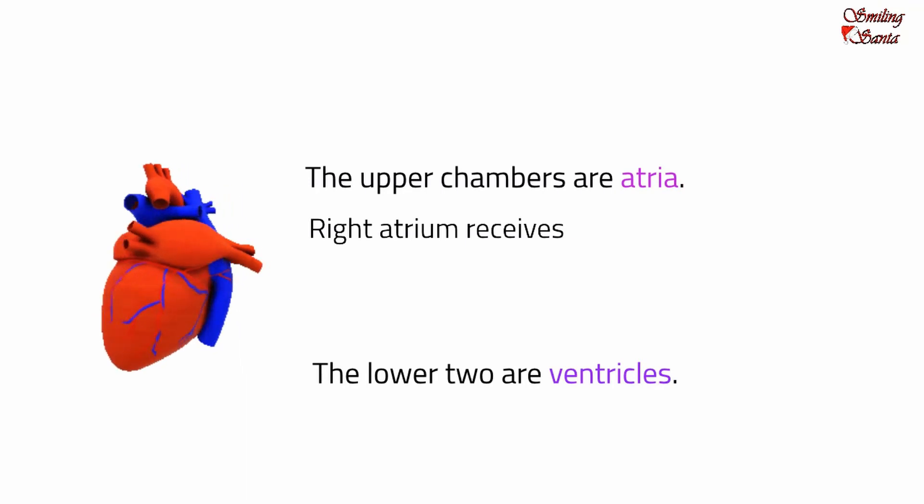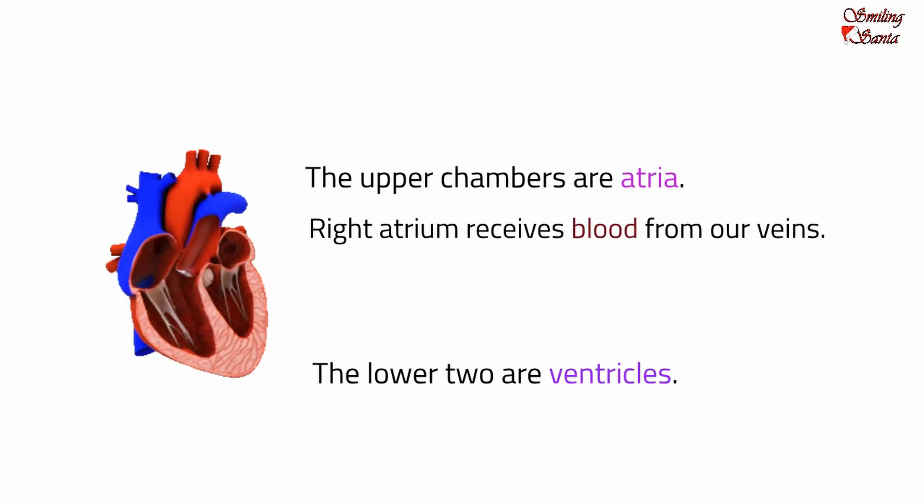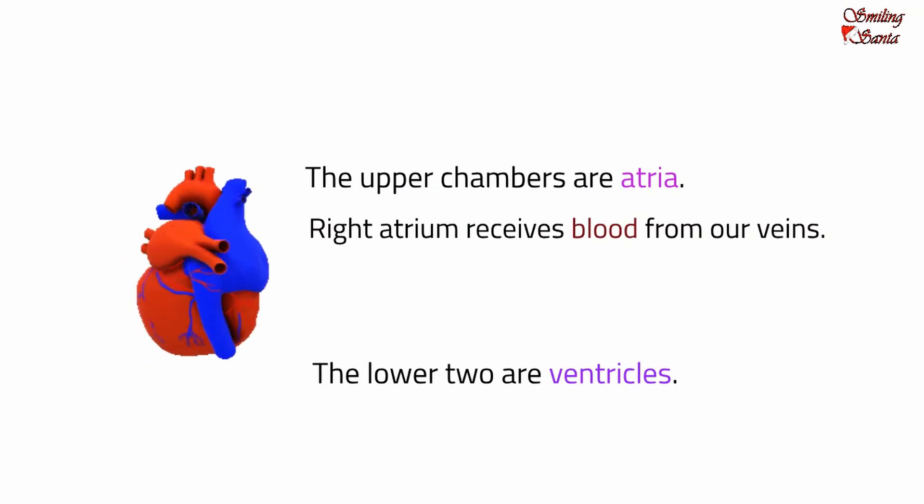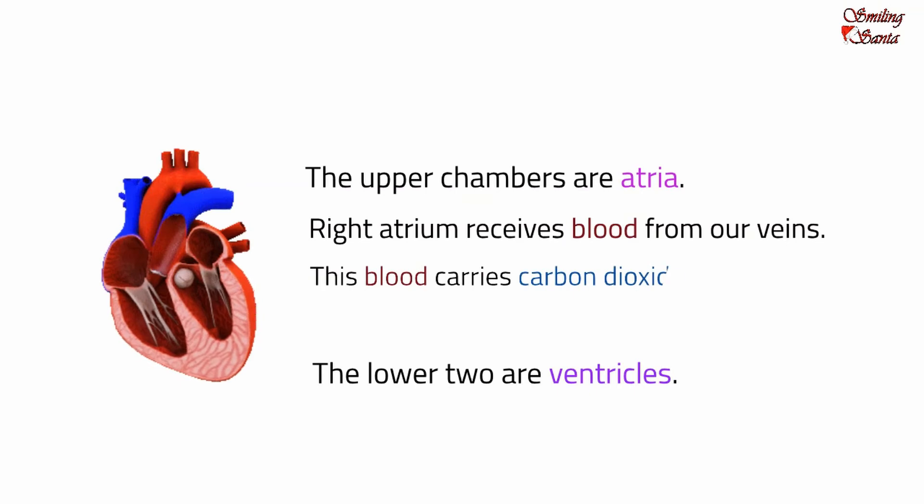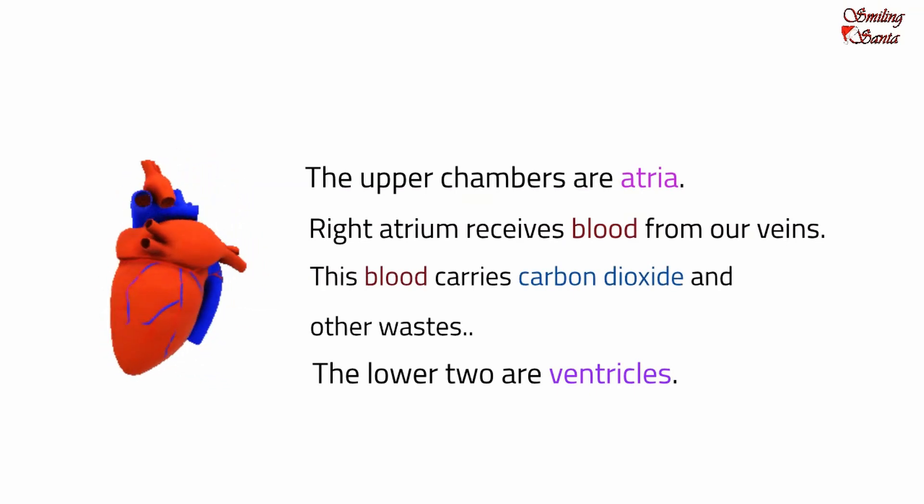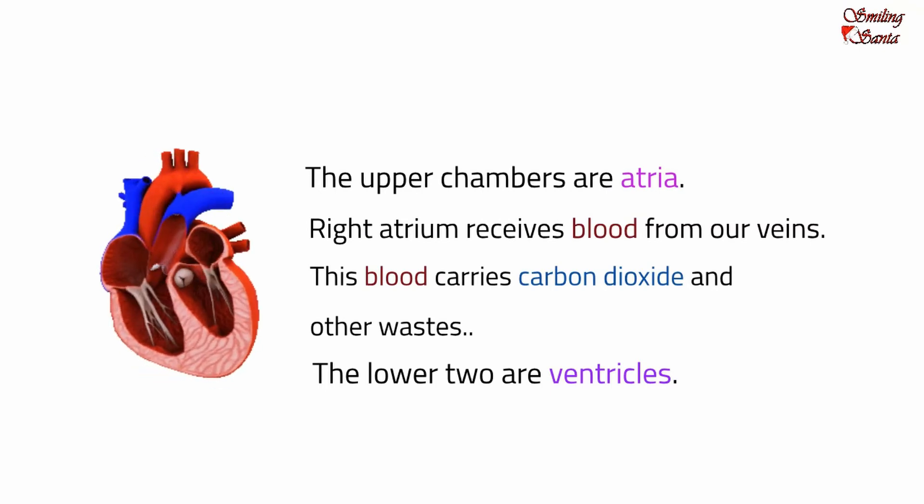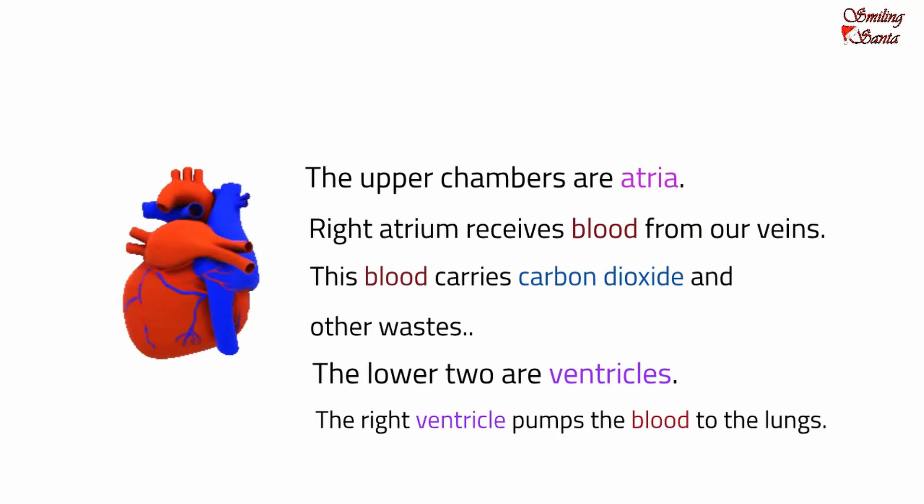The right atrium receives blood from our veins. This blood is already circulated through the body and carries carbon dioxide and other wastes. The blood then enters the right ventricle. The right ventricle pumps the blood to the lungs.